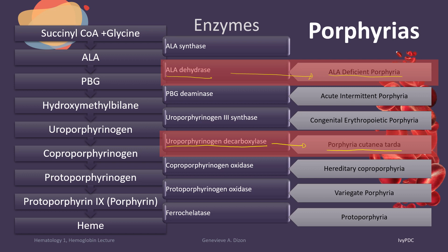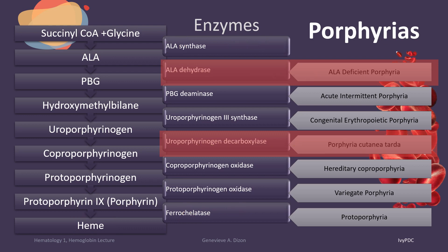An example of an acquired porphyria is lead poisoning. Lead poisoning can disrupt ALA synthase, making it defective, and it can also affect ferrochelatase. Ferrochelatase is the enzyme that adds ferrous iron to protoporphyrin-9 so that it can become a complete and functional heme.